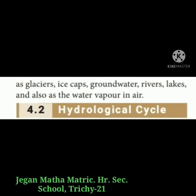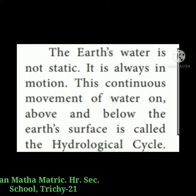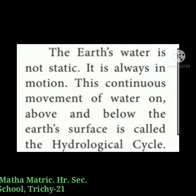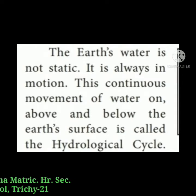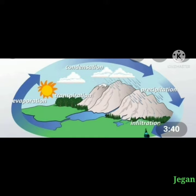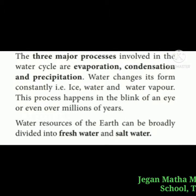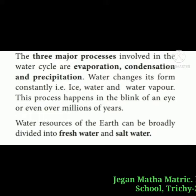Next, the topic hydrological cycle. The earth's water is always in motion. This continuous movement of water on, above, and below the earth's surface is called the hydrological cycle. The three major processes involved in the water cycle are evaporation, condensation, and precipitation. Water changes its form constantly — that is, ice, water, and water vapor. This process can happen in the blink of an eye or even over millions of years.